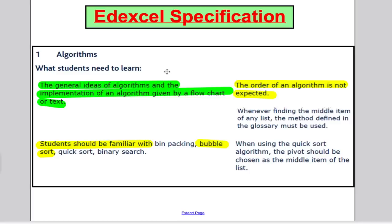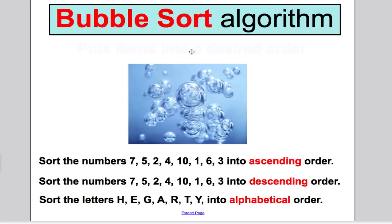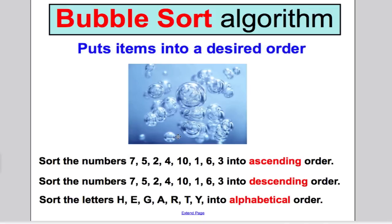Let's have a think about what the bubble sort algorithm is all about. The bubble sort algorithm puts items into a desired order for us. Here are three typical things we might want to do: we might want to put numbers in ascending order, descending order, or letters in alphabetical order. These are three of the problems we can solve using the bubble sort algorithm.